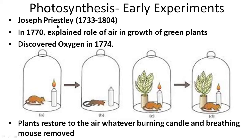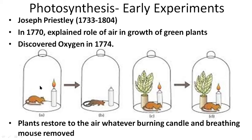First, let's look at the experiment done by scientist Joseph Priestley. He wanted to observe the correlation between the growth of green plants and the air. He conducted several experiments in the year 1770 and discovered oxygen in 1774. He took a flat surface with a burning candle and a mouse, then covered them with a bell jar — a glass container named for its shape — to study changes in the enclosed air caused by burning and breathing.